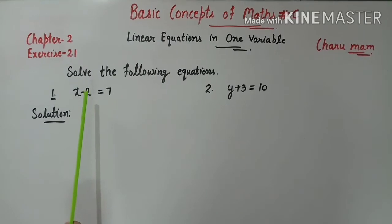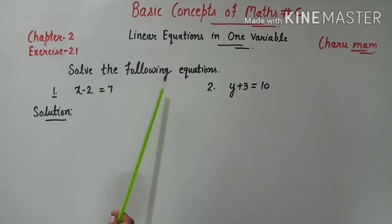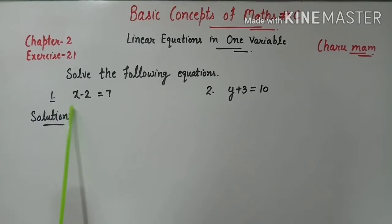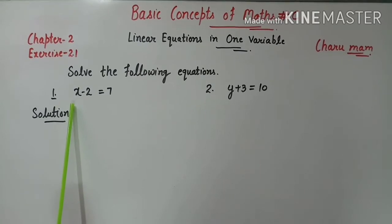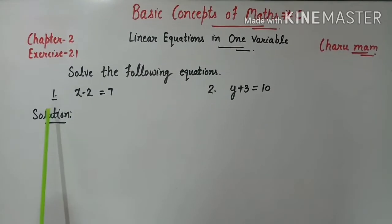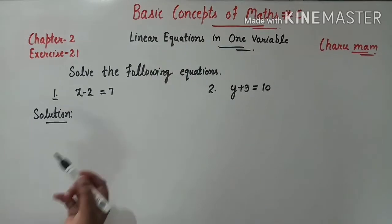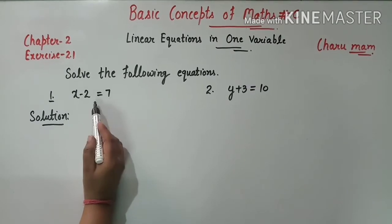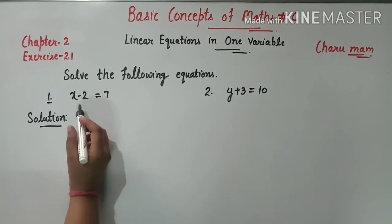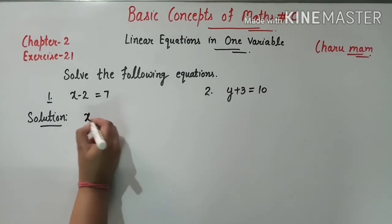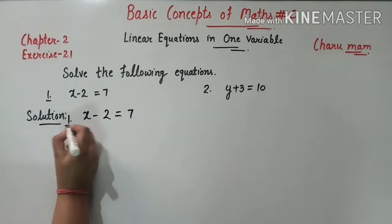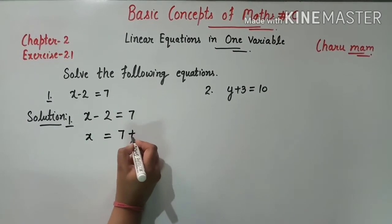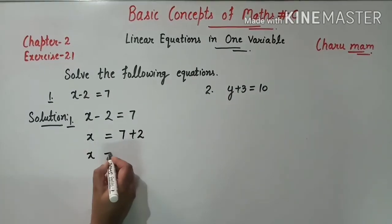Now we start questions of exercise 2.1. Solve the following equations. Question 1: x minus 2 equals 7. तो हमें इस equation को solve करना है और x की value find करनी है. Equal के left side को left hand side और right side को right hand side कहेंगे. Minus 2 right side जाएगा, तो sign change होकर plus 2 हो जाएगा. So x = 7 + 2 = 9.